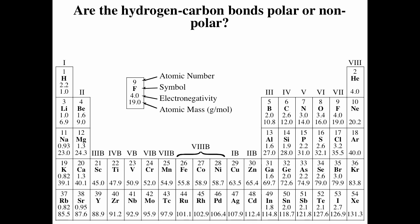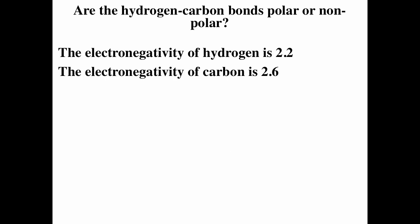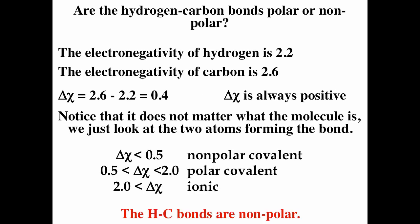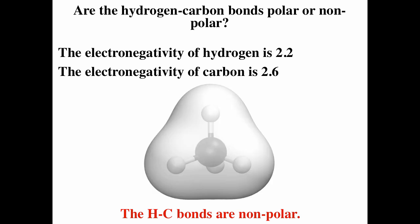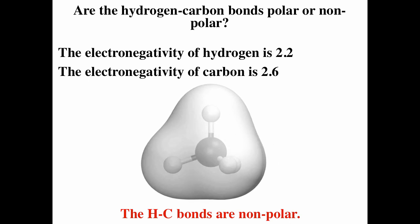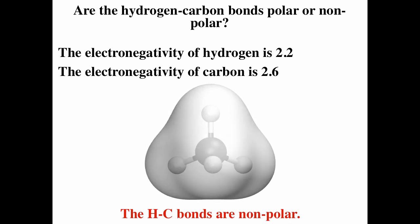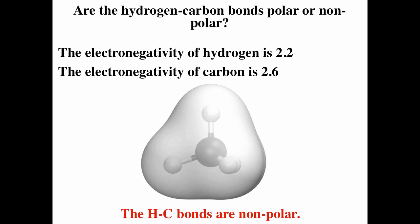Are the hydrogen-carbon bonds polar or non-polar? Carbon and hydrogen are both non-metals, so we know it's going to form a covalent bond. The electronegativity of carbon is 2.6 and hydrogen is 2.2, giving a difference of 0.4. Since that's less than 0.5, the hydrogen-carbon bonds are non-polar. If we look at methane, we see no partial negative or partial positive regions because the bonding electrons are fairly equally shared — the bonds are completely non-polar.